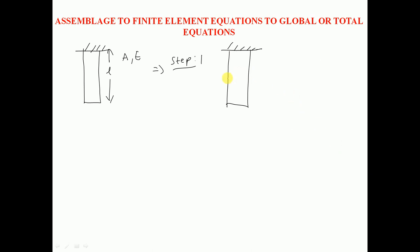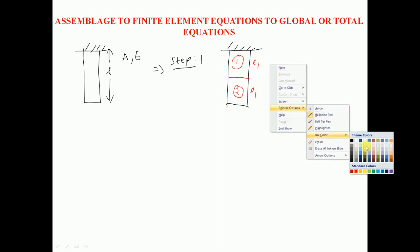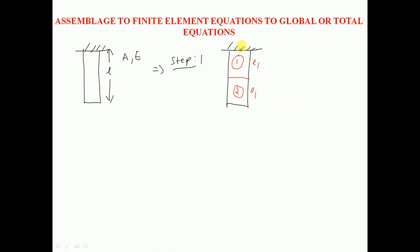You can see here the bar divided into two equal parts. I am giving the element numbers: this is element number one and this is element number two, with lengths l1 each. Then we give the node numbers: this is node one, this is node two, and this is node three.